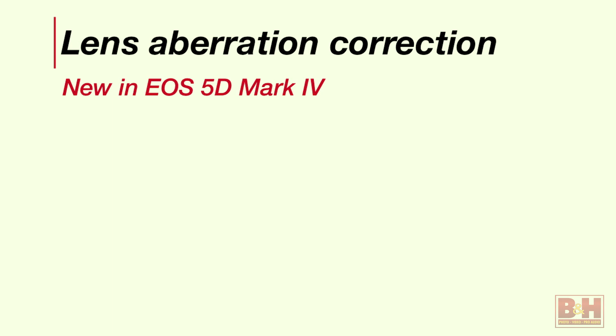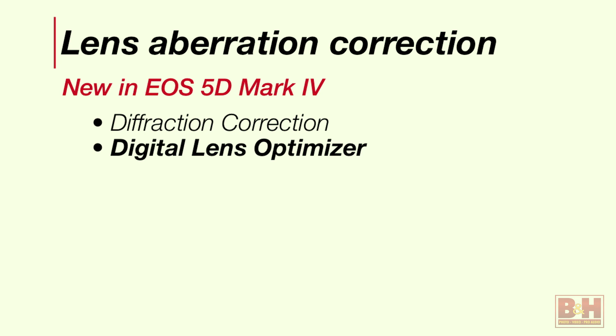They've added a couple of new things with the 5D Mark IV worth knowing about. One, which we also saw in the EOS 1DX Mark II, is diffraction correction. But the big news is the enhancements to the Digital Lens Optimizer technology. Think of it as a very lens-specific smart form of sharpening. The fact that we can now do it in-camera to some degree — rather than only in Digital Photo Professional software — is really nice.